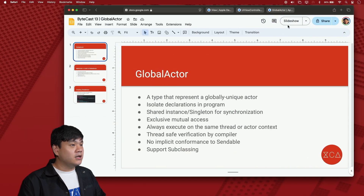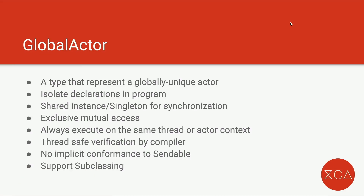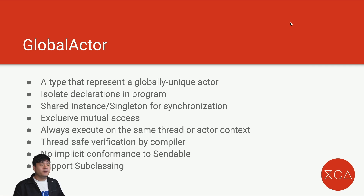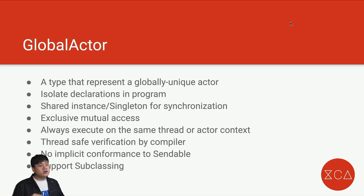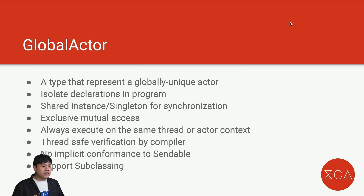I have prepared this slide presentation. A global actor is basically a type that represents a globally unique actor that can be used to isolate various declarations anywhere in the program. It's a single shared instance of an actor type that the system can use to execute certain tasks in a specific context. Synchronization is performed through this shared actor instance or singleton to ensure mutually exclusive access to the declaration. Global actors are very useful for ensuring that specific parts of your code — for example, UI-related classes — always execute on the same thread or actor context. Global actor thread-safe access is also verified by the compiler, so any possible thread-safety issues will produce build-time errors and won't make it to production before we fix them.